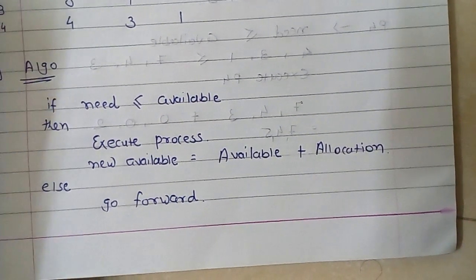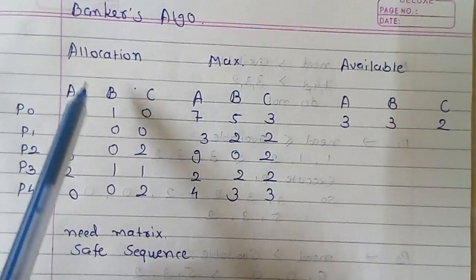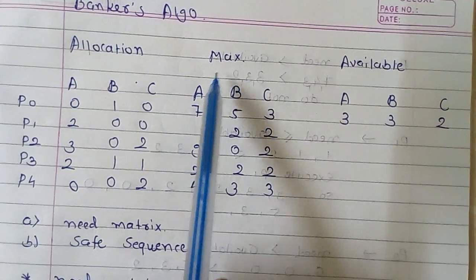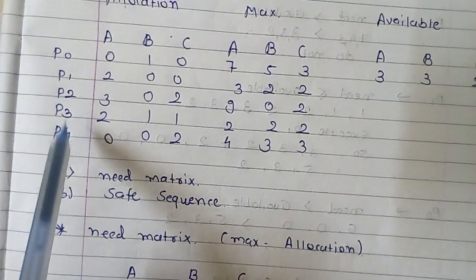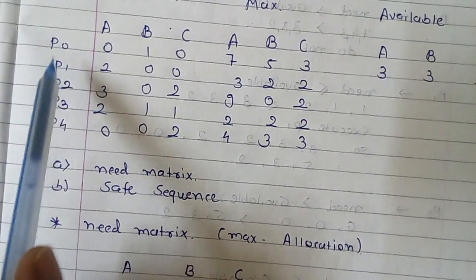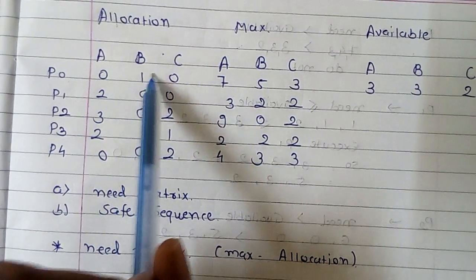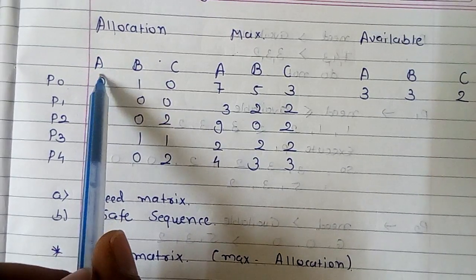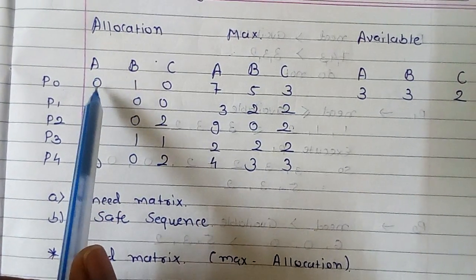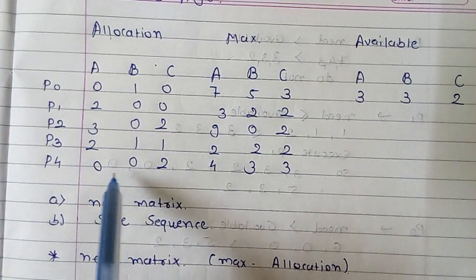Now let's discuss the example for a better understanding. Here the question gives us an allocation matrix, a maximum matrix, and available resources. There are five processes — P0, P1, P2, P3, and P4 — and three resource types: A, B, and C. The allocation matrix values are: 0 1 0 | 2 0 0 | 3 0 2 | 2 1 1 | 0 0 2.